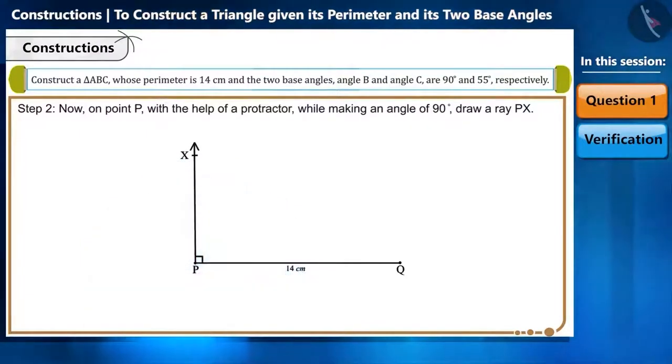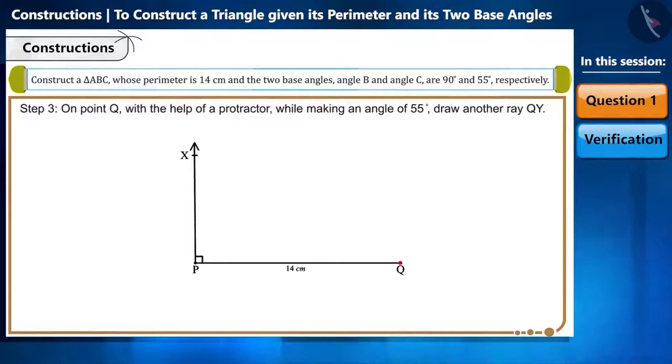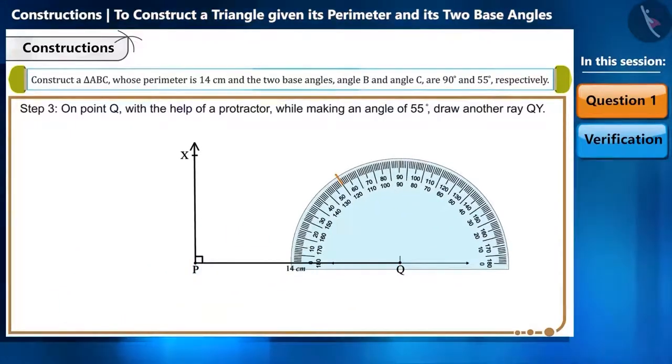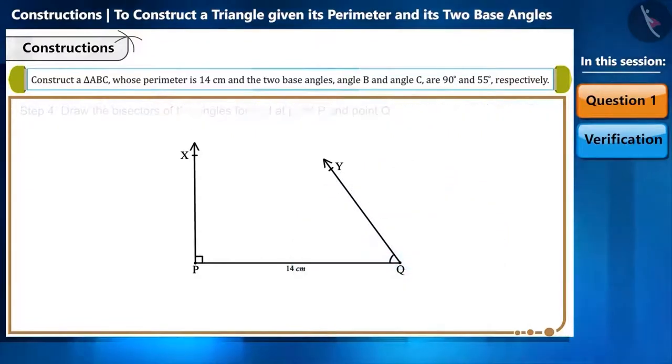Step 3: Similarly, now on point Q, with the help of a protractor, while making an angle of 55 degrees, draw another ray QY.